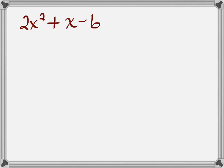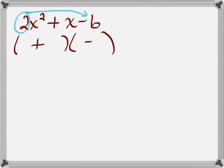We're going to start by factoring into two binomials. Before, we always used x and x. So what I'm going to do is take the leading coefficient 2 and multiply it times the constant 6. But first, let's get our signs — we bring down the positive, and a positive times a negative is a negative. Now I'm going to multiply 2 times 6 to get 12, set that aside, and put x's in the front of each binomial. I'm looking for two numbers that multiply to give 12 that when subtracted give 1.